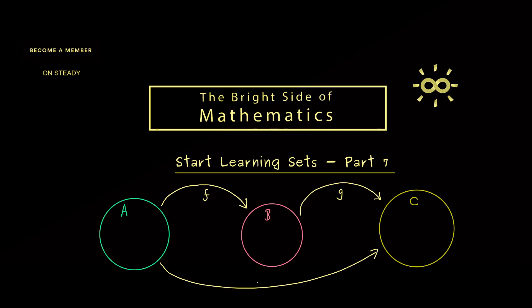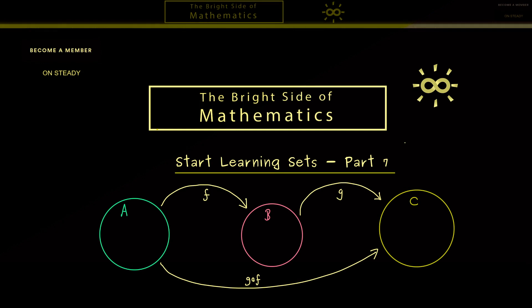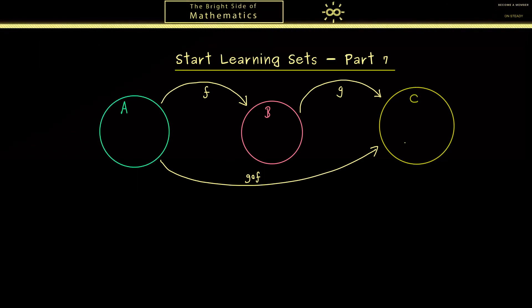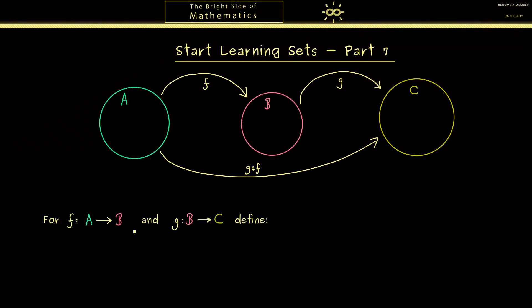This one is what we call the composition and is denoted with a little circle between the two maps. So it's not so complicated hence we can immediately write down the definition. The only things we need are the two maps where the co-domain of the one map is the domain of the other one.